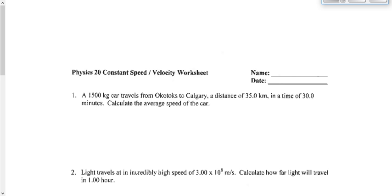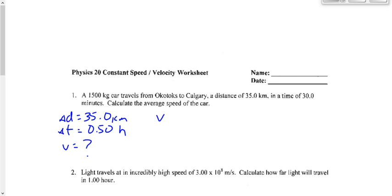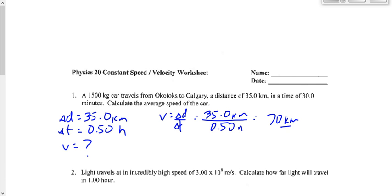Question 1: a 1,500-kilogram car — the mass is irrelevant — travels from Okotoks to Calgary, a distance of 35 kilometers, in a time of 30 minutes, or 0.50 hours. We want the average speed. Speed is distance over time. We're already given the distance, so we just divide: 35 kilometers over 0.50 hours gives 70 kilometers per hour. That's positive, but since speed is always positive, it has no directional meaning — just 70.